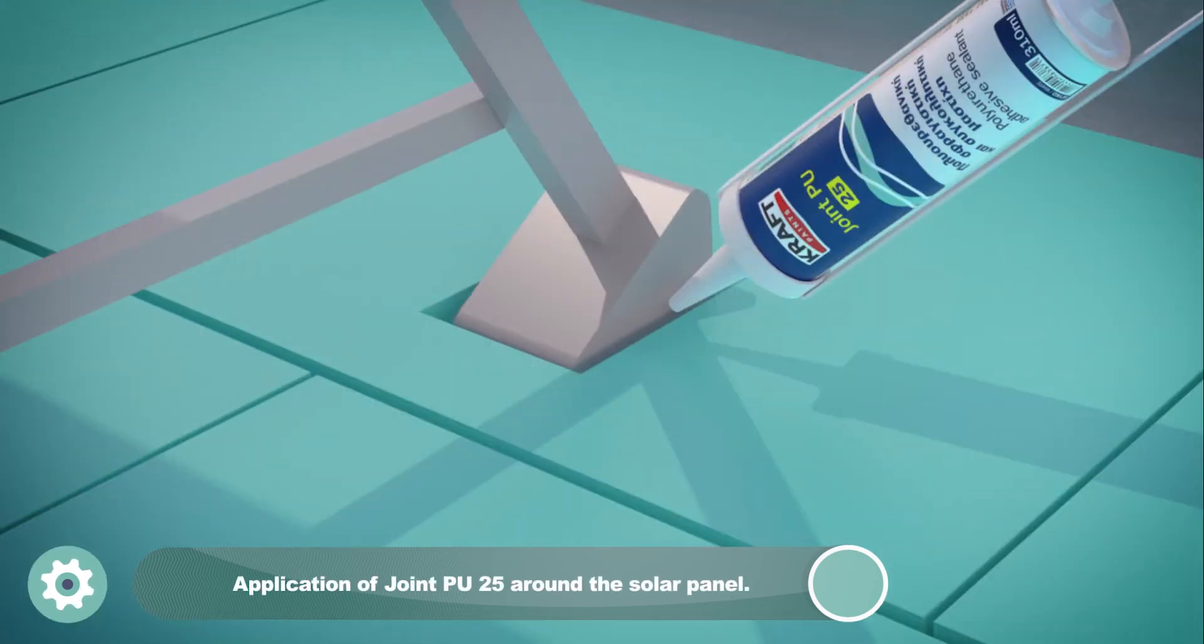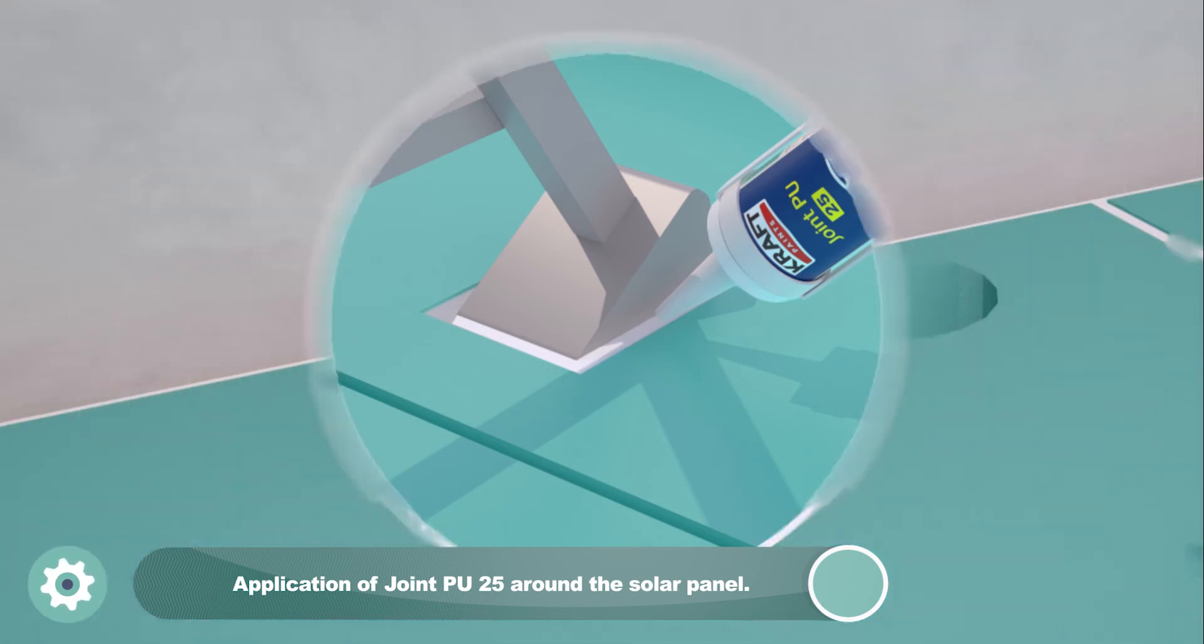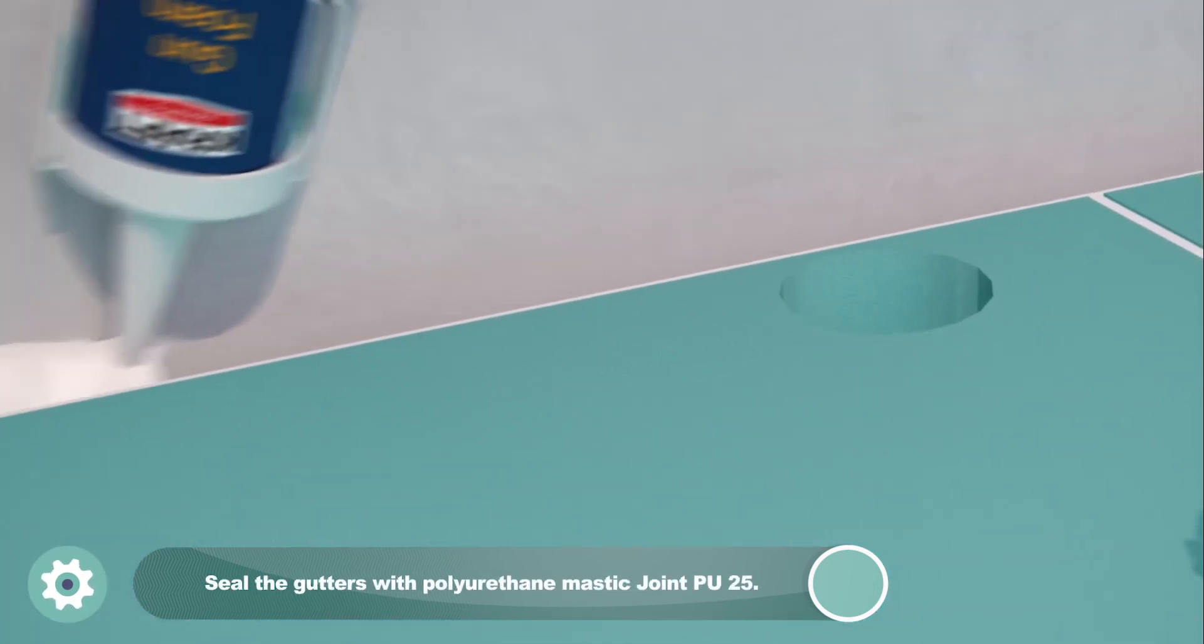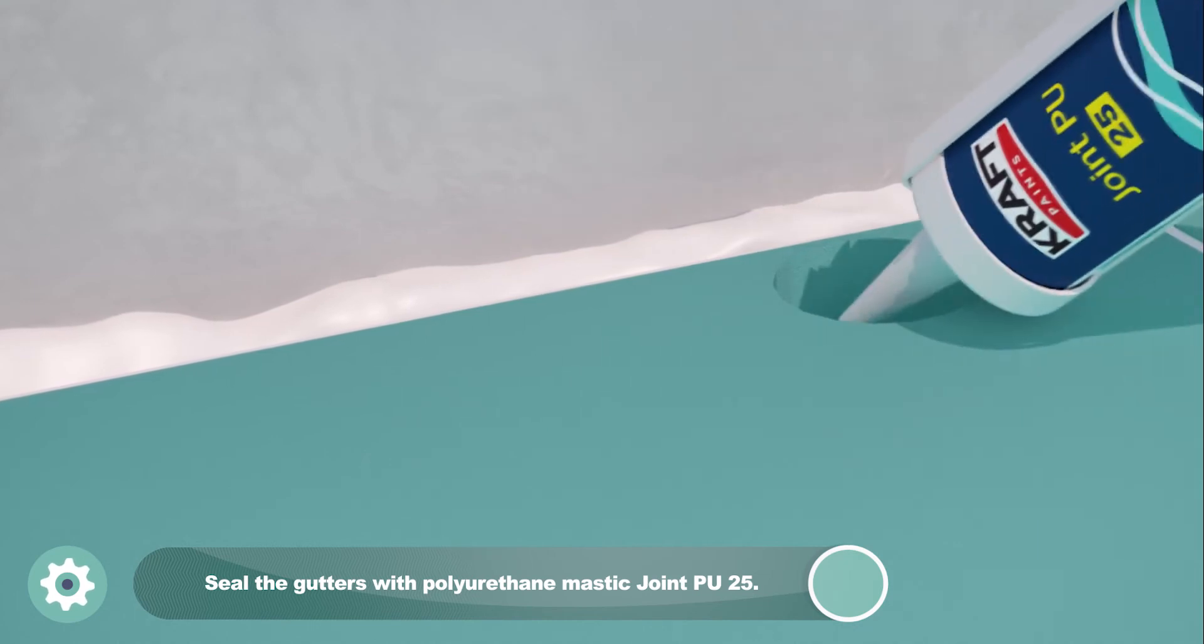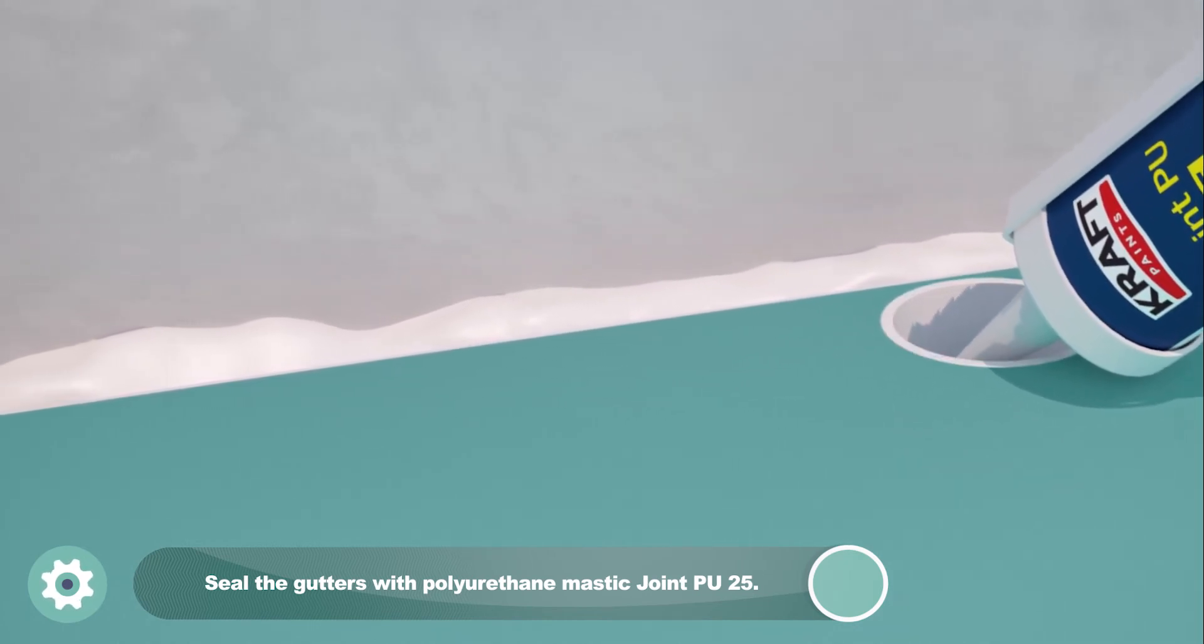At points such as solar heater support frames, joint PU-25 polyurethane mastic sealant should be applied for proper waterproofing and sealing. We seal the gutters and the perimeter of the construction with polyurethane mastic joint PU-25.